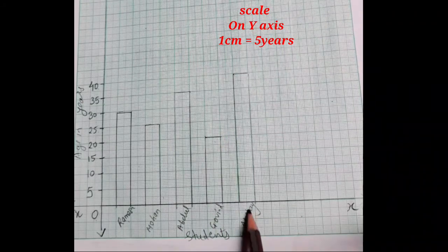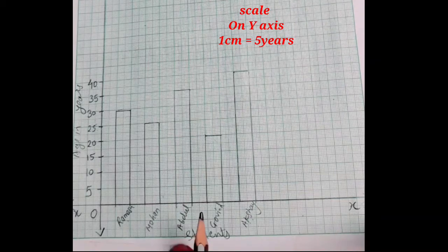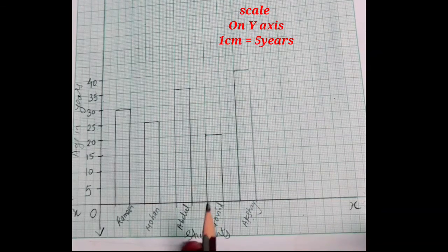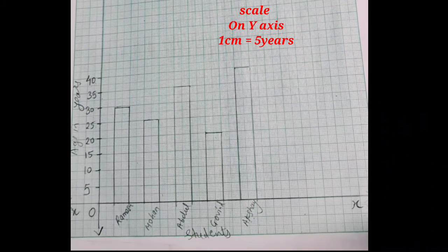Ramesh age was given 30. Mohan age was given 25. Abdul age was given 35. Govind age was given 20. The Akshay age is given 40. Children.